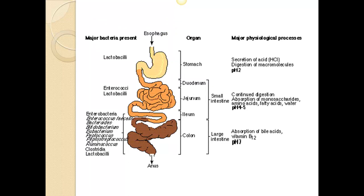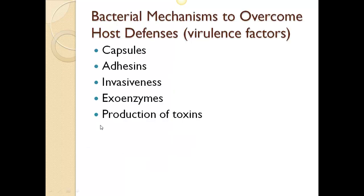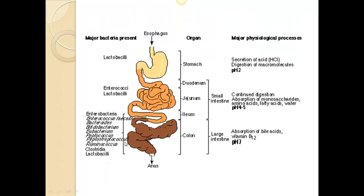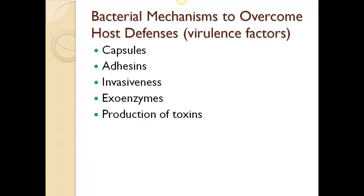This slide isn't really clear, but we can see that depending on where we are in the body, there are different organisms present. In the stomach there's a large presence of lactobacilli, and lower down in the GI tract different sorts of bacteria are present. So what do bacteria do to overcome the host defenses? These are the virulence factors.